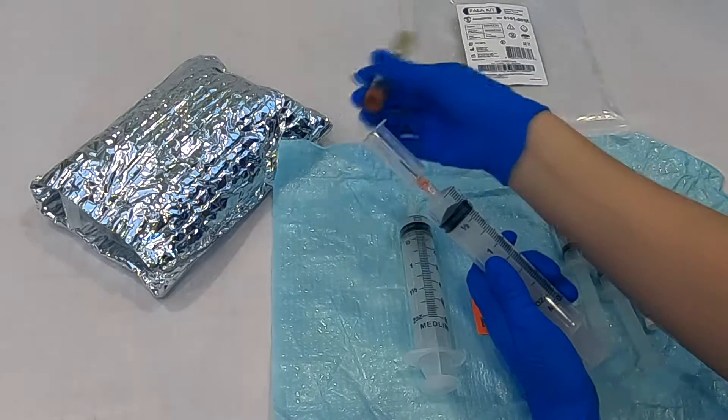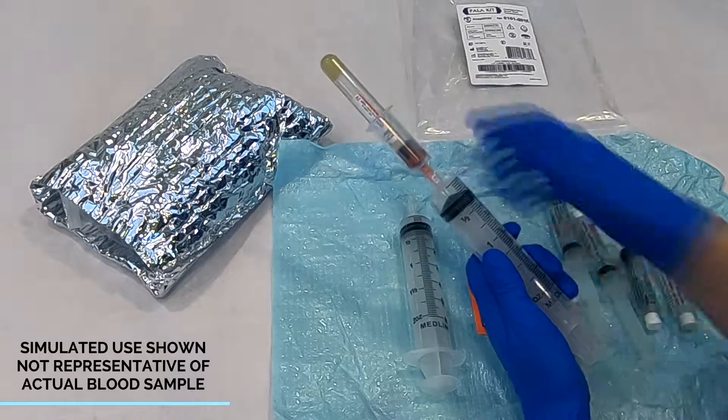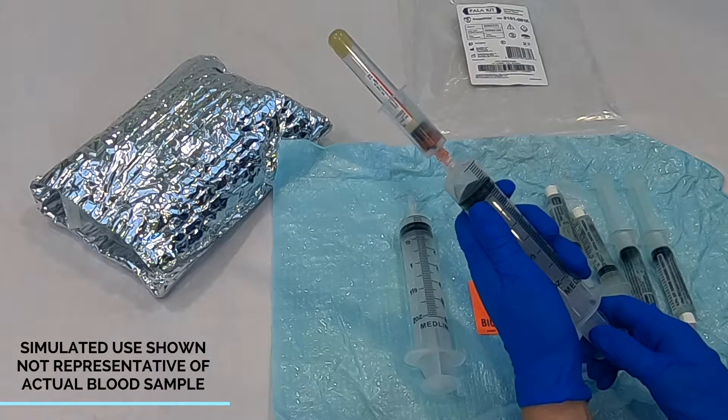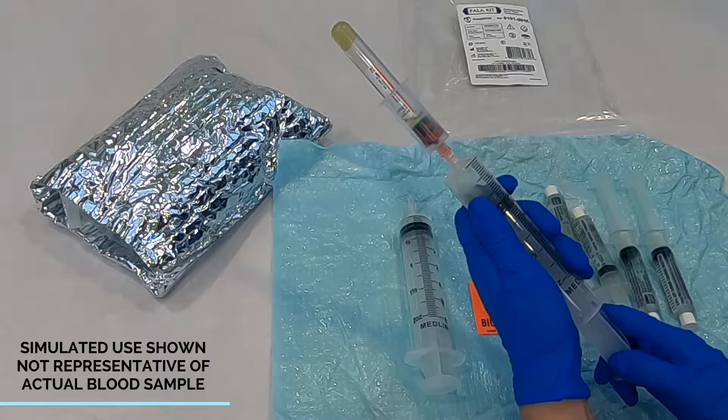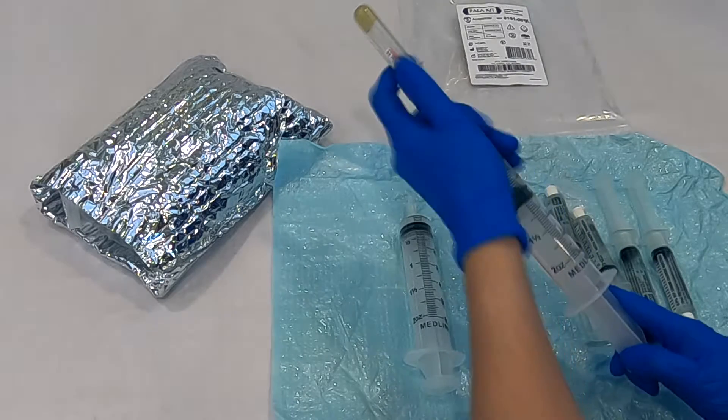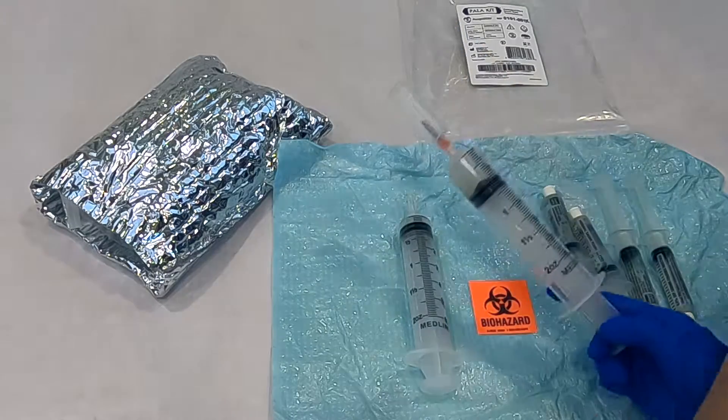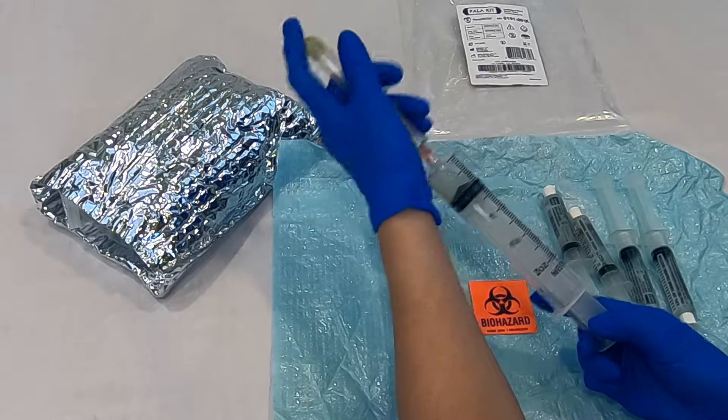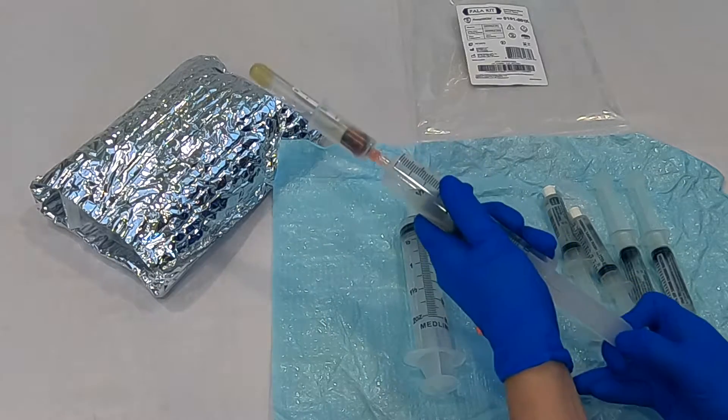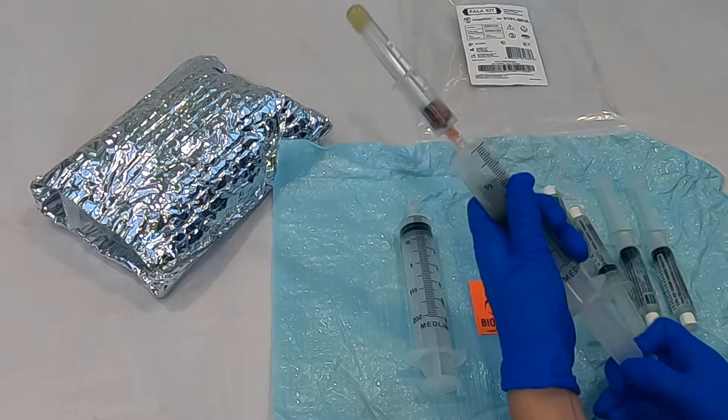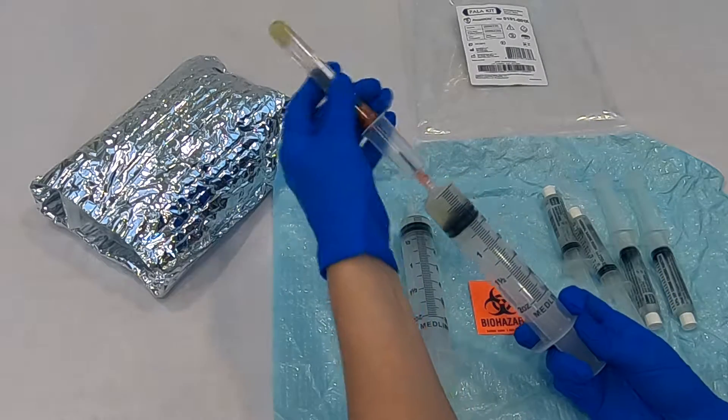Insert a centrifuged blood collection tube into the phlebotomy barrel. Invert the barrel and blood collection tube so that the clear blood serum is at the bottom of the collection tube. Do not shake or rock the tube. Draw the serum into the 60 milliliter syringe. Be careful not to draw any red blood cells into the syringe. Repeat with each blood collection tube until the prescribed volume of serum is collected.